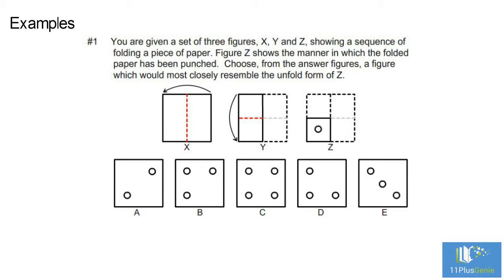In figure X the paper has been folded on the center line from right to left. In figure Y the paper has been folded on the center line from the top to the bottom. A hole has been punched in the middle of the square that is formed. In solving this question we will repeat the folding sequence but backwards, and as we unfold the paper we will mark the positions of the holes.